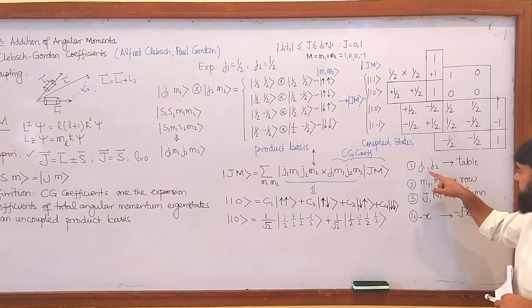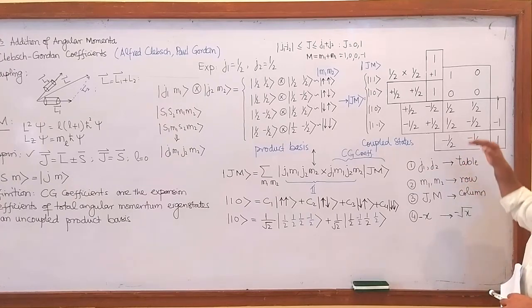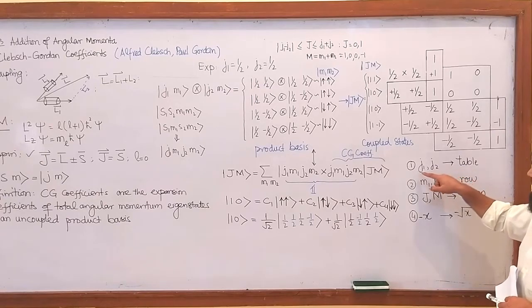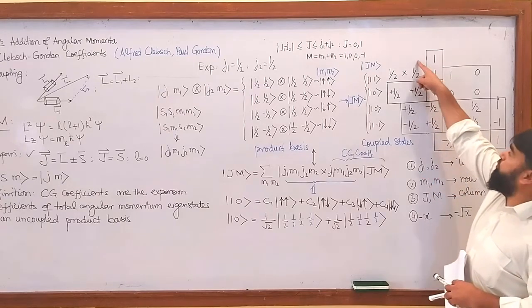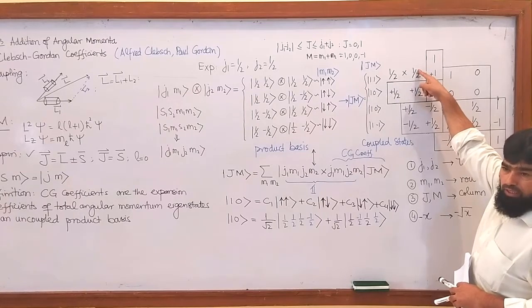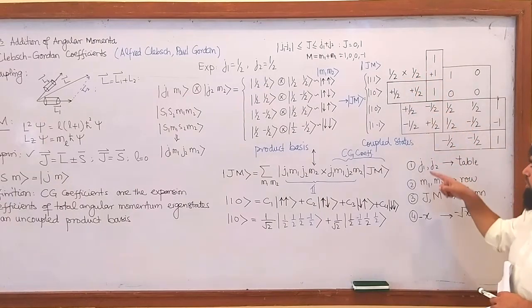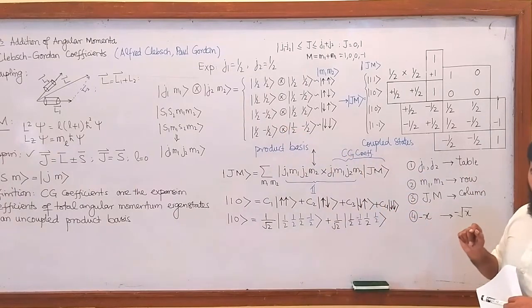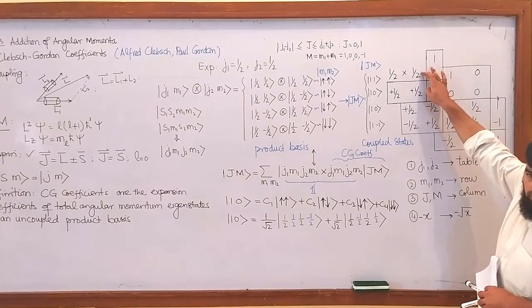The very first rule: to locate a table, because the tables are having many branches. To locate the table, you must locate the J values. The J values will be written like this: 1 over 2 cross 1 over 2, meaning this is regarding j1 and j2. So we located a table.